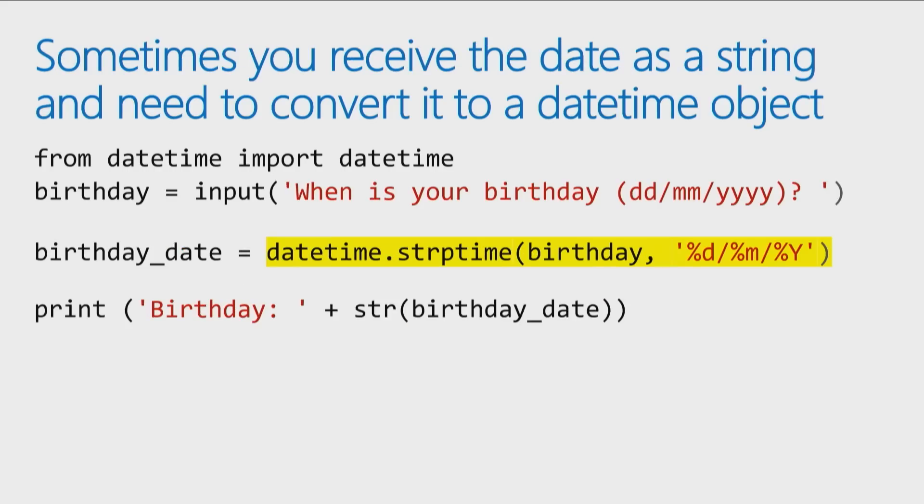Now, sometimes, somebody will give you a date and then you need to store it as a date. Maybe that doesn't make a lot of sense, but think back to what I was saying in the numbers module, when I was talking about when you use the input function and you ask for a value, it always gets stored as a string. So I say, when's your birthday? And I say, my birthday is on the 5th of June, 1999. Yeah, we'll go with that. And then, you want to store that value, because right now it's a string, you want to store it as a date.